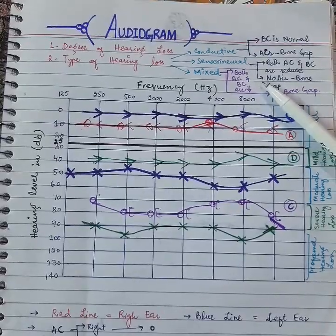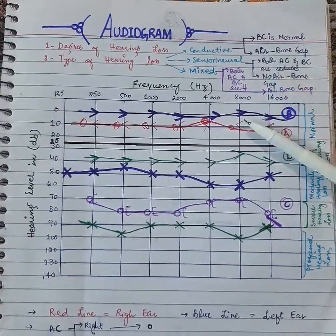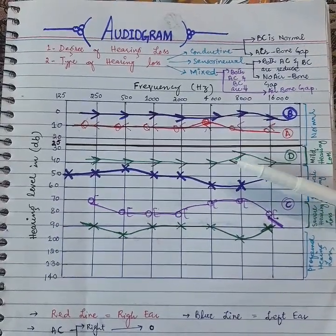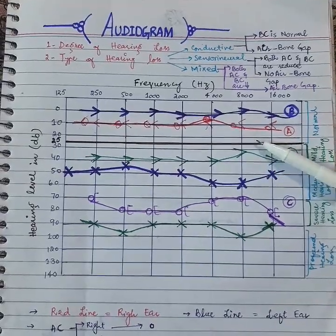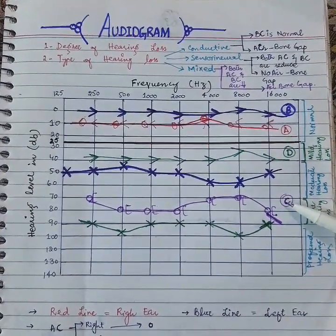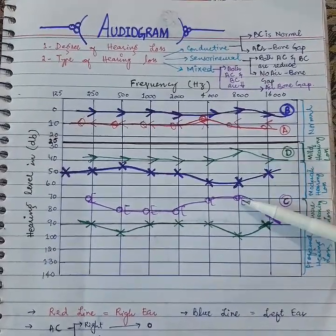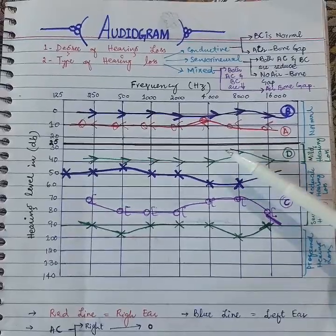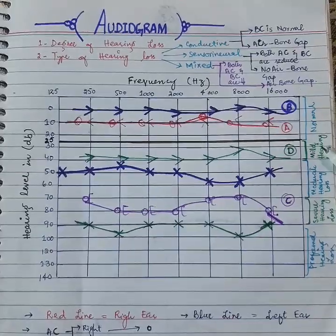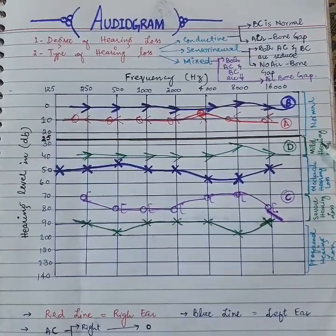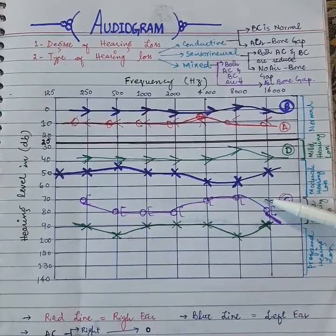Number two is sensorineural hearing loss. There should be two conditions fulfilled. Number one, both bone conduction and air conduction should be reduced — both should be below the level of 25dB. As you can see in graph C, air conduction and bone conduction are both reduced, equally reduced, and there is no air-bone gap. So it is pure sensorineural hearing loss.